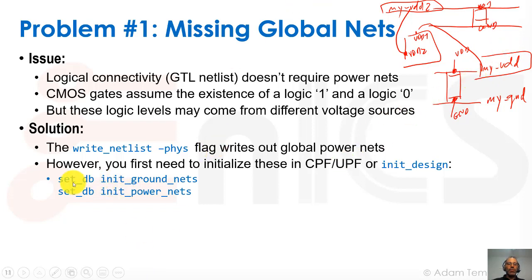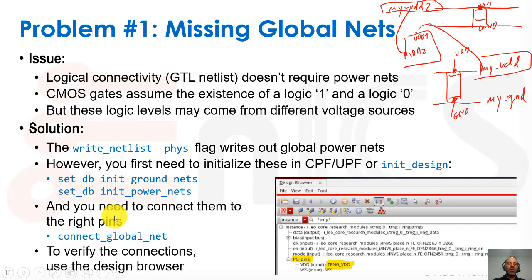In Innovus, this is done using the setdb_init_ground_nets and setdb_init_power_nets commands. It can also be done inside the CPF and UPF formats. Once we've defined that these exist as my_VDD and my_VDD2 and so forth, then we have to connect them to the right pins. That in Innovus is done with connect_global_nets, and it can also be done inside the CPF UPF format. To verify this, we'll take a look at the design browser, which I'll show you in a few minutes with an example on a real design.